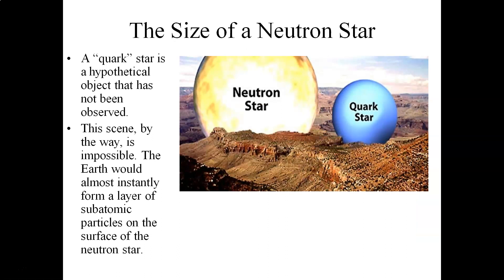Here's a nice little graphic depicting the relative size of a neutron star compared to the Grand Canyon. This particular scene is impossible, by the way, due to the enormous gravitational field associated with the neutron star. Basically, what would happen almost instantly is that the Earth itself would form a single layer of atoms at the surface of the neutron star. Now, a similar object called a quark star. Quarks are the inner constituents of protons and neutrons, has been hypothesized, but it has never been observed in nature. So far, we only know of neutron stars, and then the ultimate case of what happens with gravitational core collapse, that is a black hole.